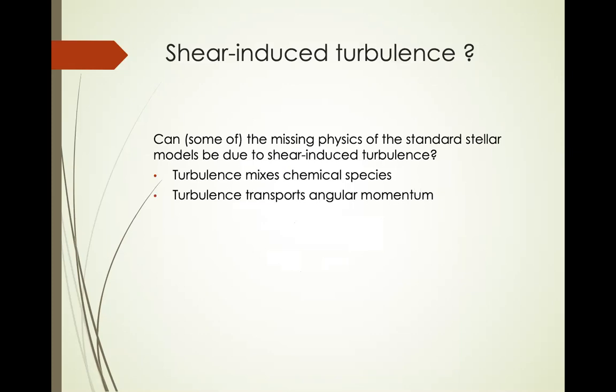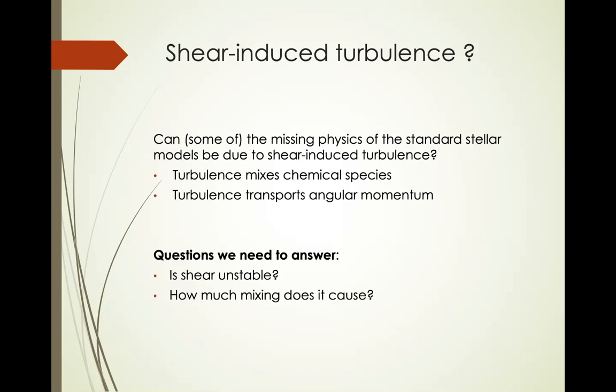In general, there appears to be a correspondence between regions of stars where we know there's shear and regions where we know there's missing physics. I'm approaching the problem with the notion that this is probably not a coincidence, and asking whether the missing mixing could be due to shear-induced turbulence. Turbulence mixes chemical species — addressing surface abundance problems — and also transports angular momentum. The key questions are: is the shear unstable in the first place, and how much mixing does it cause? I'll talk about vertical shear and horizontal shear in parts one and two.